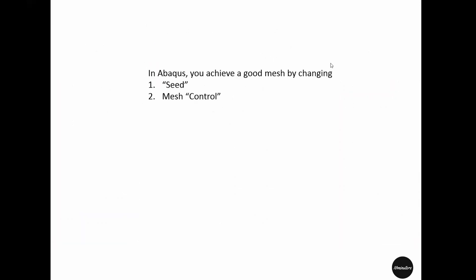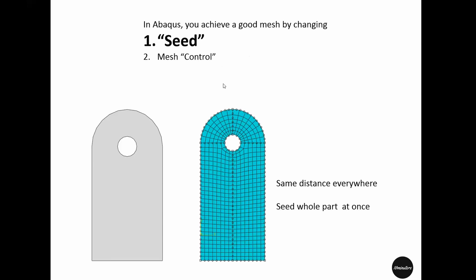In Abaqus you can design a mesh as you wish using two basic actions: seed and mesh control. In the Abaqus mesh module you can select the number or size of seeds — seeds are represented by these small circles. You can define the distance between two seeds, keeping the distance the same everywhere and seeding the whole part at once. After seeding, the elements created will touch those seed points. By defining seed points you make sure where your element lines cross at the boundary and at any partition made inside this part, but seed cannot define what happens inside — only at edges or partitions.